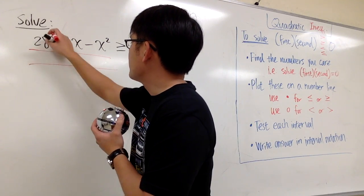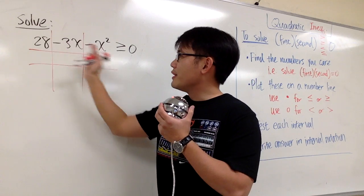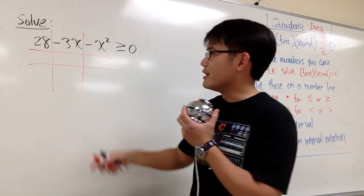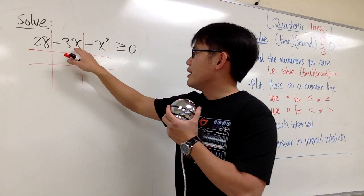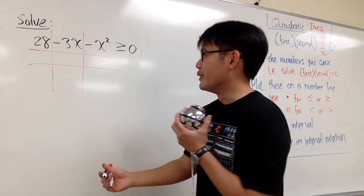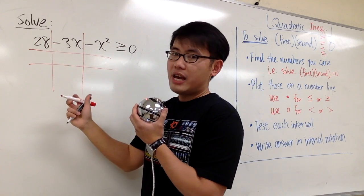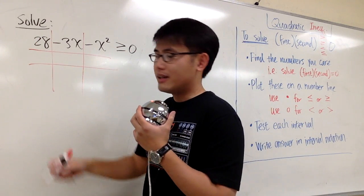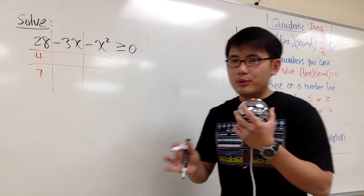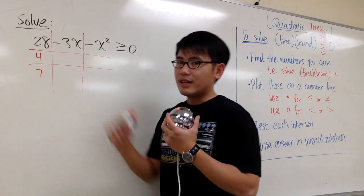So the first thing is, we can do a tic-tac-toe, because here we have three terms. We can factor this out by using tic-tac-toe. And notice that, even though this right here is not in the standard form ax squared plus bx plus c, as long as you have a number, x and x squared, it's still going to work. Let me show you.